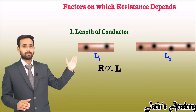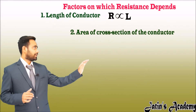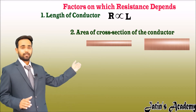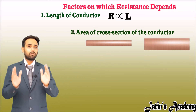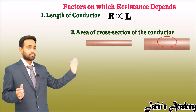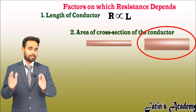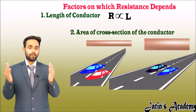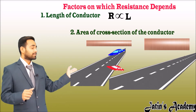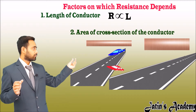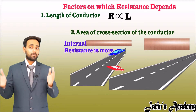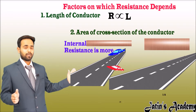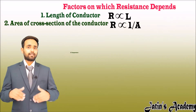The second factor is cross-sectional area. Taking two wires of the same length but different cross-sectional area — one thin wire and one thick wire. To understand this with another perspective: consider two roads, one narrow and one wide, with the same number of cars. Where are the chances of accidents more? Yes, on the narrow road. Similarly, a narrow wire has a higher chance of internal resistance because the cross-sectional area is less. So as the area increases, the value of resistance decreases — area is inversely proportional to resistance.